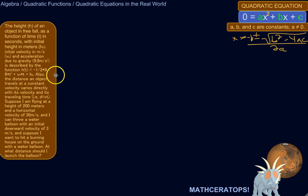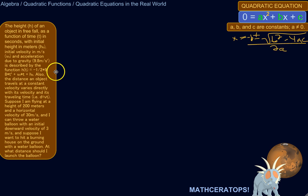Also, the distance an object travels at a constant velocity varies directly with its velocity and its travel time. That's just a fancy way of saying distance equals speed times time, or distance equals velocity times time.